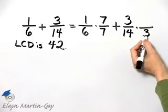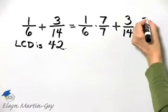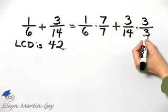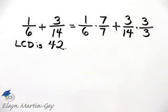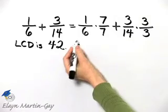Whatever this number is in the denominator, you must put that same exact number in the numerator so that you are in essence multiplying by 1 and you are not changing the value here. So let's continue.